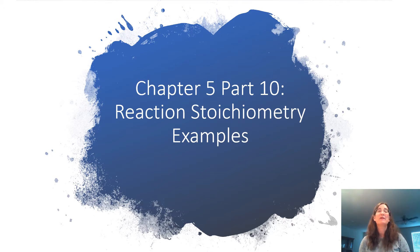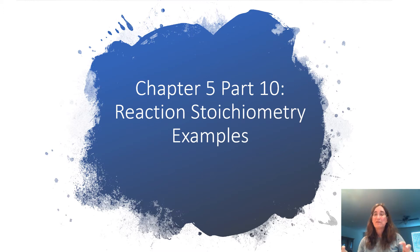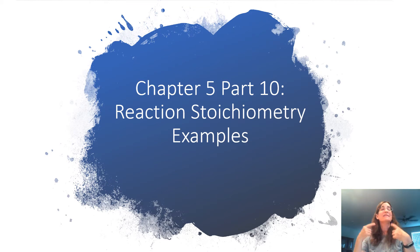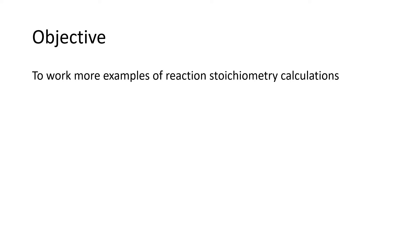When we start our dimensional analysis process, we will take the number we are given with its unit and its chemical, write that down over one, and then multiply by a conversion factor. When we build that conversion factor, we're going to put two numbers into it because we have two different chemicals involved. In the bottom of the conversion factor we'll put a number from the conversion chart and a coefficient; in the top we'll put a number and a coefficient from the balanced equation. Our objective is to work more examples of reaction stoichiometry calculations.